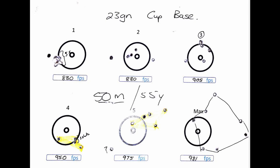The best grouping with the 23 grain cup base was at much lower speed than expected. It was at 830 feet per second with a grouping of five shots of 8.5 millimeter. The moment it started picking up speed, the group started opening up, and at 980 it was all over the place.